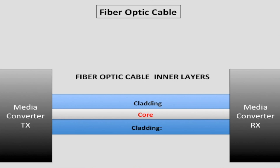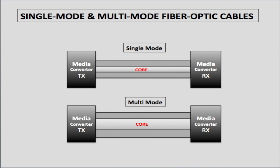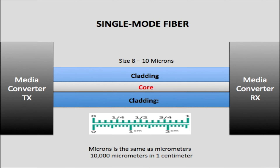There are two types of fiber optic cables: single mode fiber and multi-mode fiber. Single mode fiber cable has a very small core, while multi-mode fiber has a much larger core. The core size of single mode fiber is between 8 and 10 microns — that is, 8 to 10 micrometers. Microns and micrometers are the same thing.